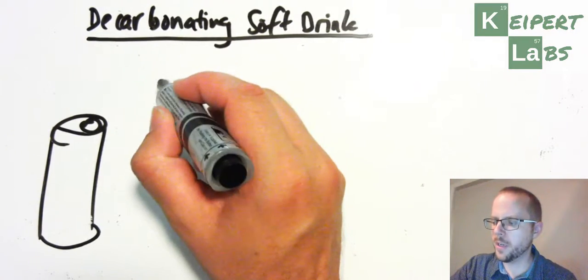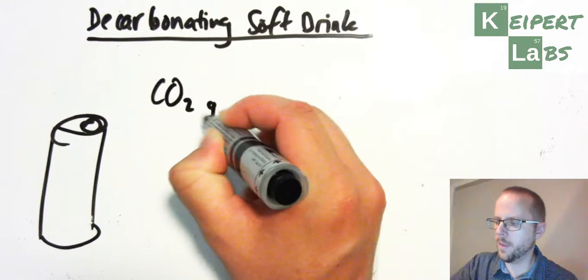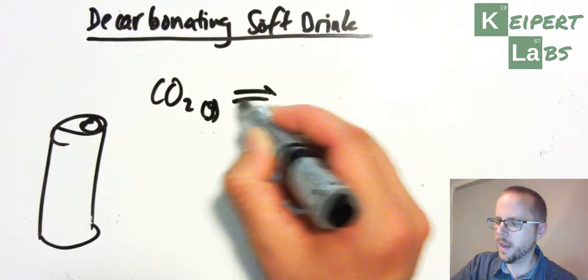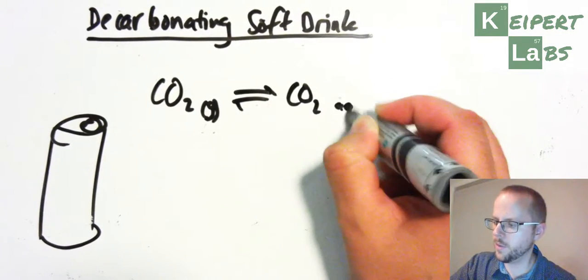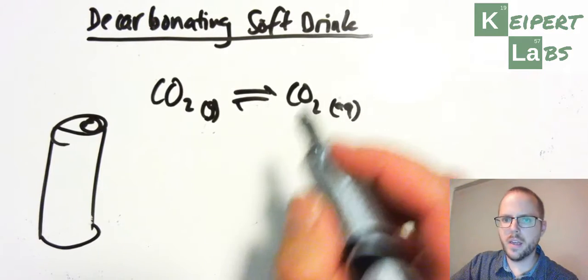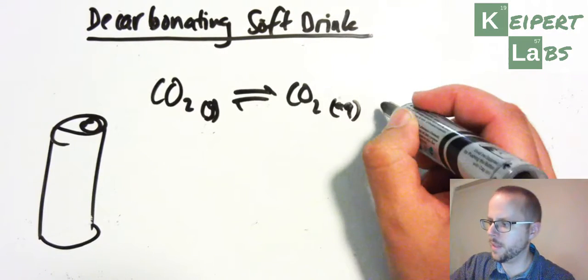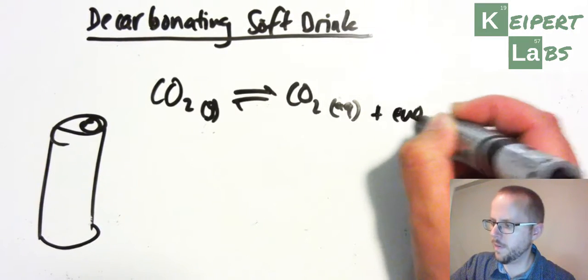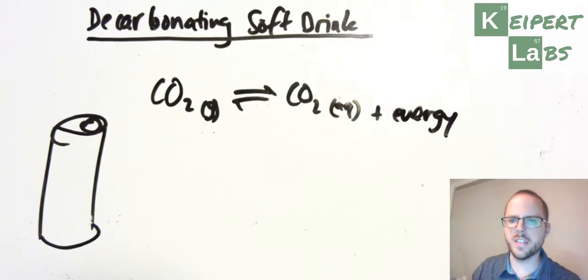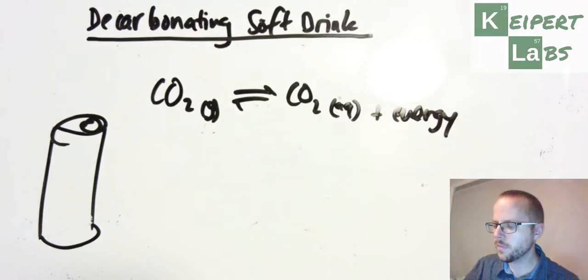Remember that when we're talking about this equilibrium, that we're talking about gaseous carbon dioxide in equilibrium with the aqueous, or dissolved, carbon dioxide, and remember that we're saying then plus energy, that it's a delta H is negative, so that we can put that on that side of the equation.